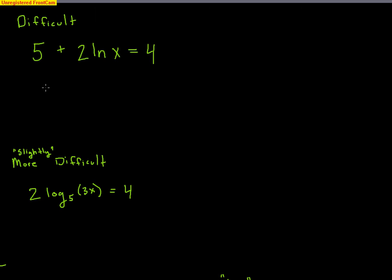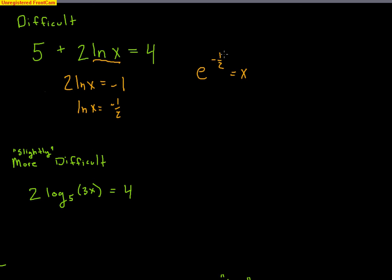Here's a more difficult one. The log part is the natural log of x, so isolate it first — move the 5 over to get 2·ln(x) = 4 − 5 = −1, then divide by 2 to get ln(x) = −1/2. Applying the rule: x = e^(−1/2). To avoid a negative exponent, rewrite as 1/e^(1/2), or equivalently 1/√e. That's the exact answer; use your calculator for the decimal approximation.